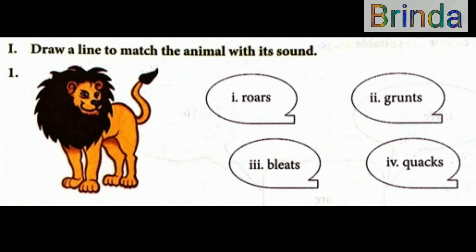First Roman number: draw a line to match the animal with its sound. So you have to draw the animal and its sound. Here is a beautiful animal — who is king of the forest? Lion. So what is the sound? Your options are: roars, grunts, bleeds, quacks. Lion roars.